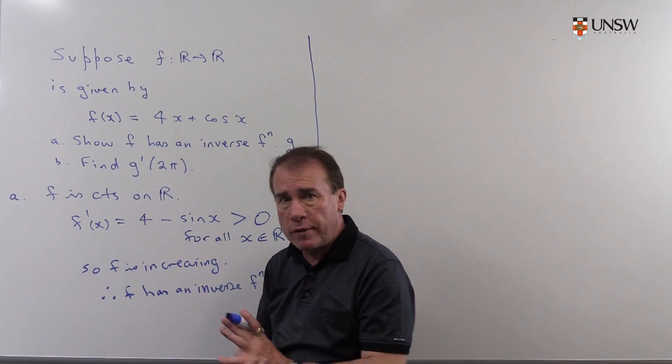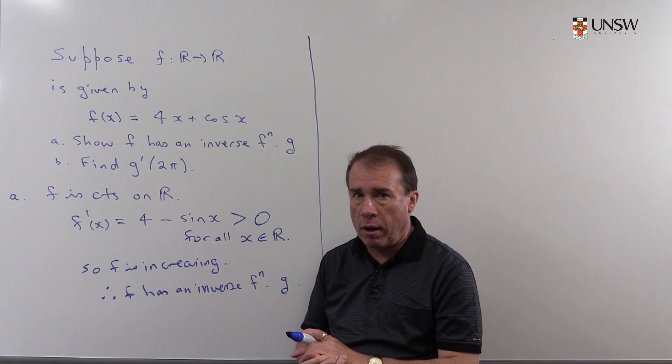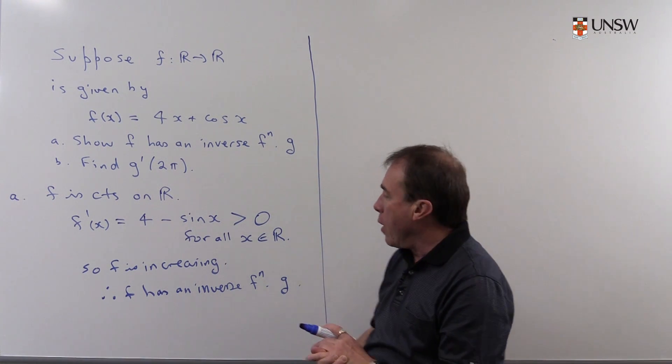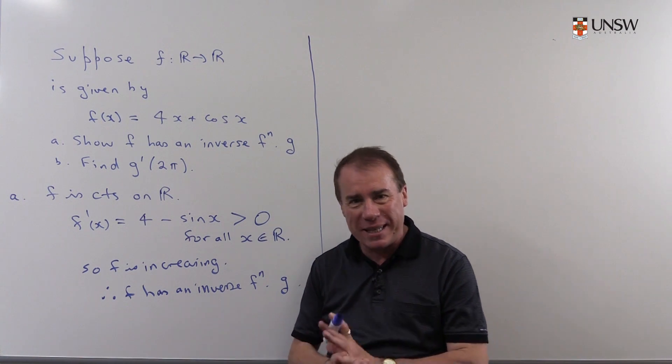The second part, we're asked to get the derivative of this function g evaluated at 2π. Now actually, although we've shown this function does have an inverse, we know it exists...